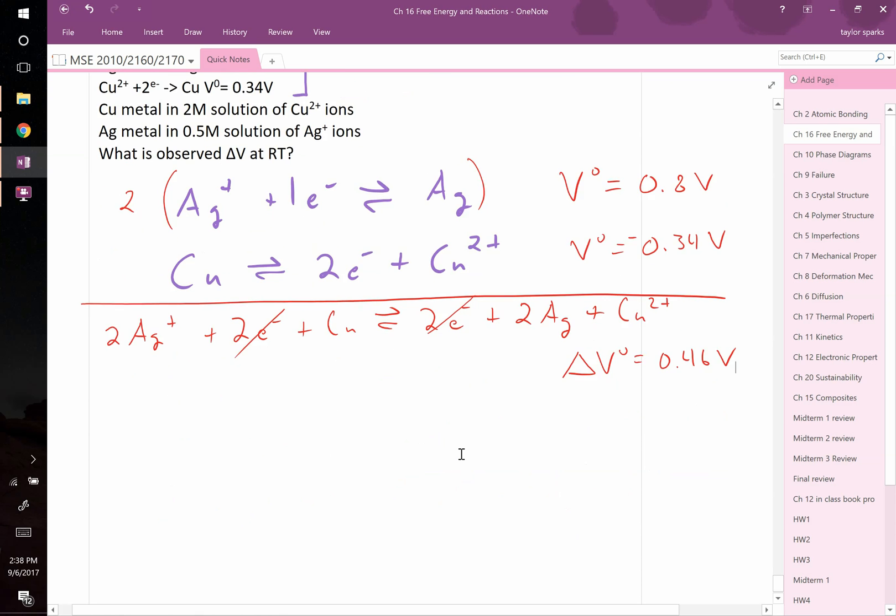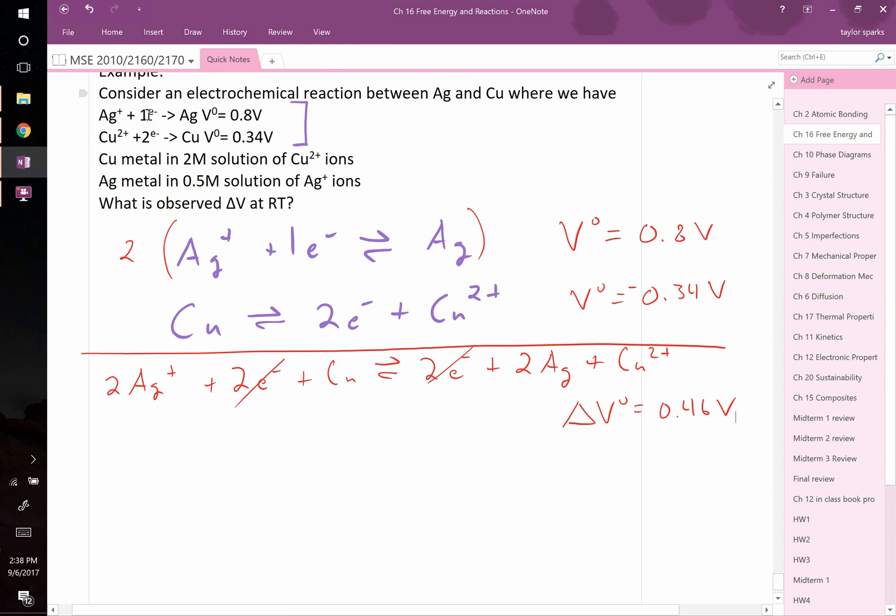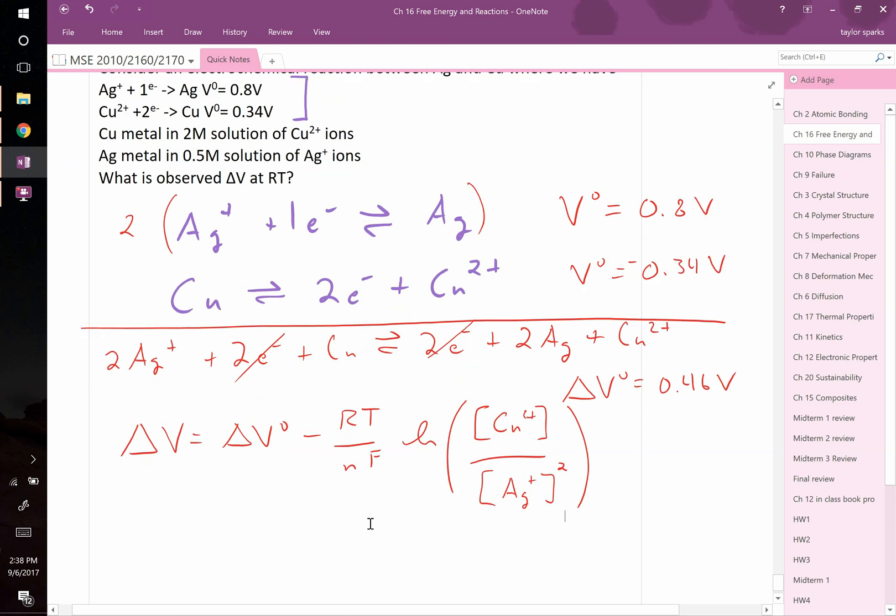Okay, now that's just the overall cell potential. That's not the voltage that we're going to read if we were actually to put these things in solution and hook it up to a multimeter. That value we have to solve as delta V, which is equal to delta V0 minus RT over NF natural log of the concentration of our species which is oxidized. That's going to be copper 2 plus over the concentration of our species which is reduced, which is going to be silver plus. Now, because there are two silver ions there as a coefficient in front of the silver ions, we need to raise this to the 2 power. So we can go ahead and plug in our values and solve for what this will be.